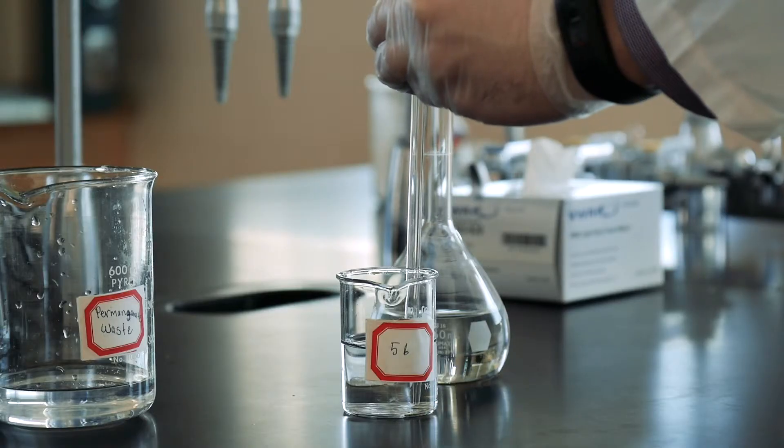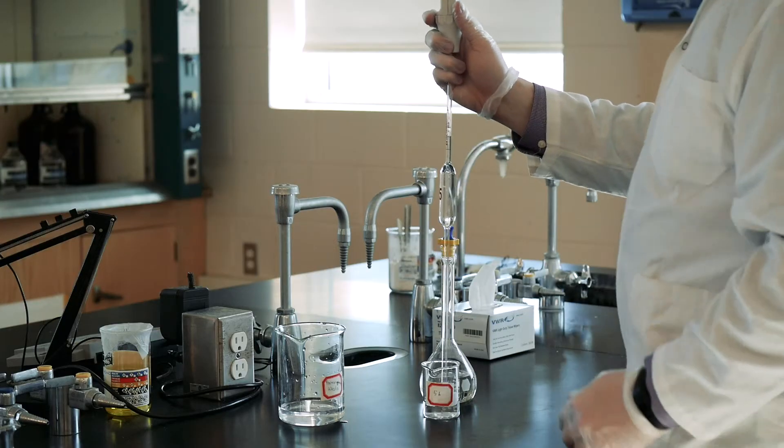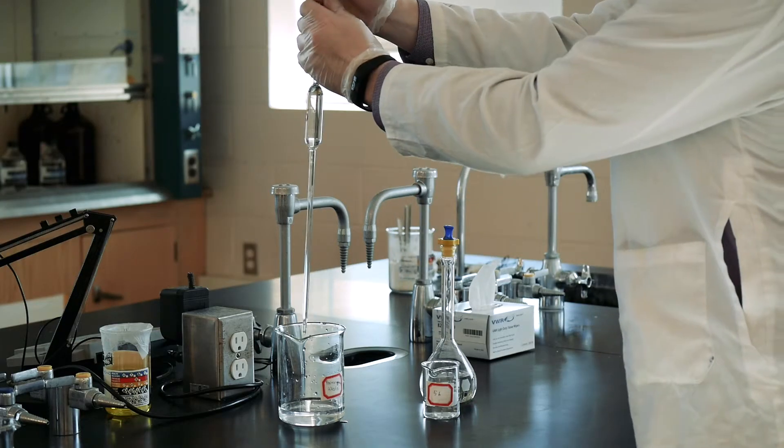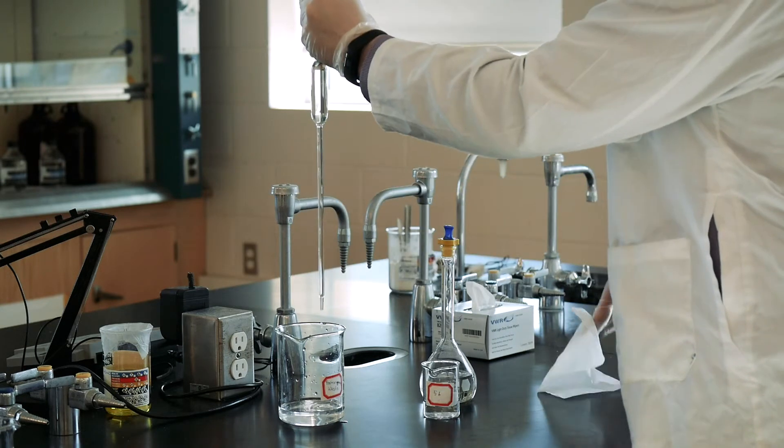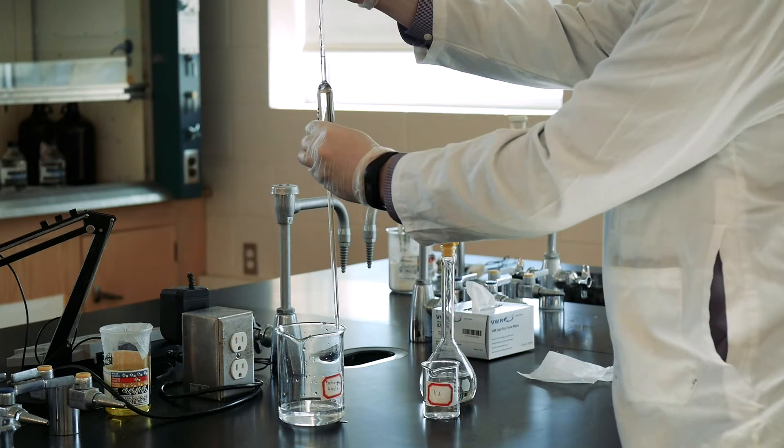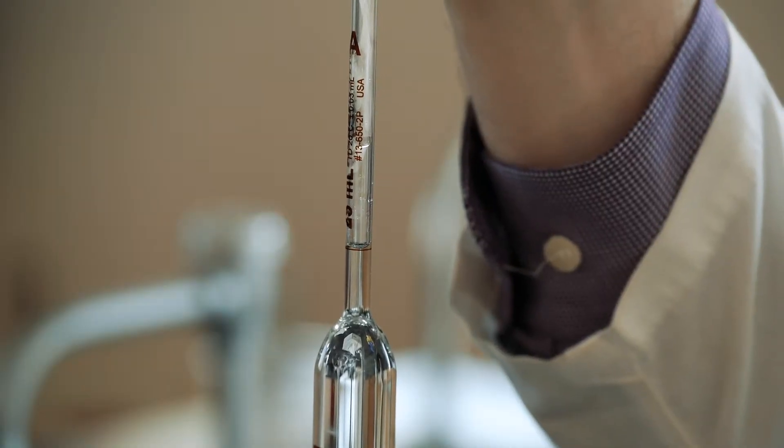Pipette the sample to about an inch past the calibration line on the pipette by drawing liquid up with the pipette bulb. Remove the pipette from the sample and wipe the tip with a kim wipe. Place the pipette over a waste beaker and gently press the lever down until the bottom of the meniscus just touches the line at eye level.